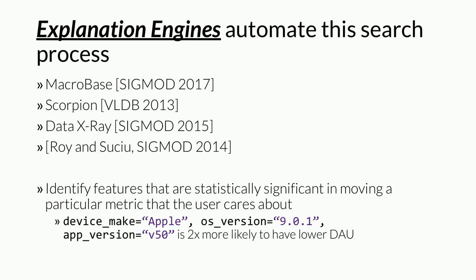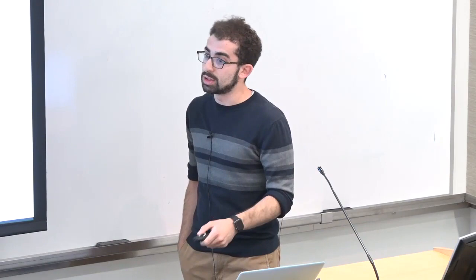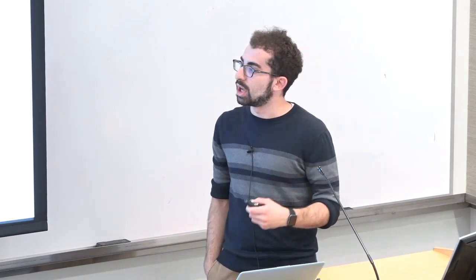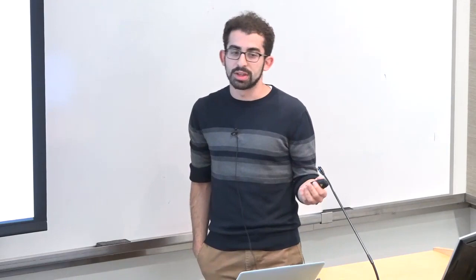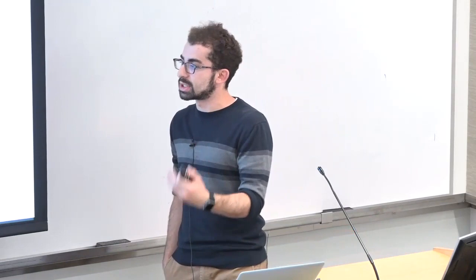People have proposed what are called explanation engines that try to automate this search process. This has been an active area of research for the last five years or so in the database community. Out of our group at Stanford, we proposed the Macrobase system at SIGMOD 2017. There's also been Scorpion at VLDB 2013, Data X-Ray at SIGMOD 2015, and work from UW by Roy and Suchu at SIGMOD 2014. These explanation engines aim to identify particular features that are statistically significant in moving a metric you care about — for example, identifying that a specific device make, OS version, and app version is giving you a 2x decrease in DAU.